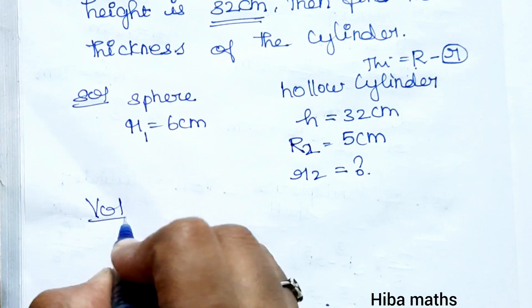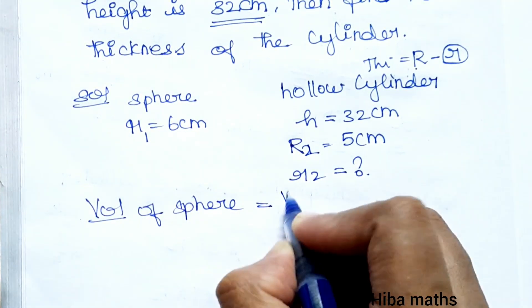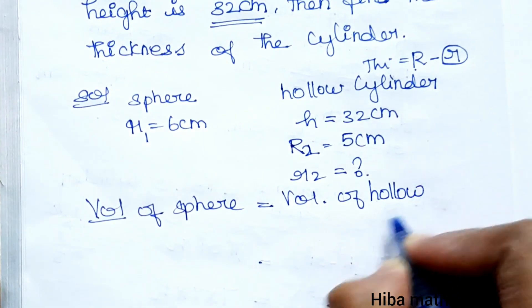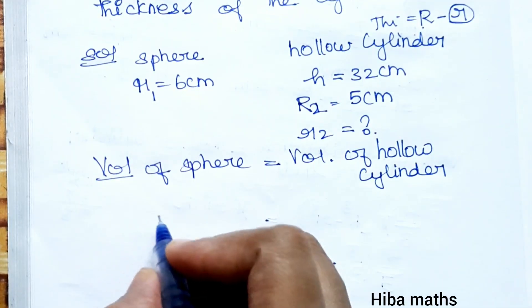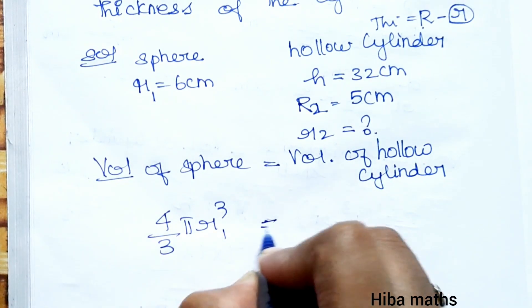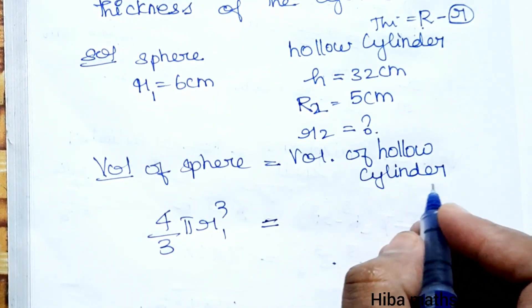Volume of sphere is equal to volume of hollow cylinder. Volume of sphere formula is 4/3 πr³. Volume of hollow cylinder is πr²h.